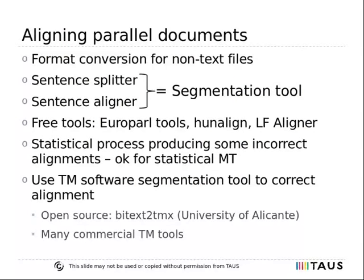Oftentimes, translation resources from previous translation projects are only available as a loose collection of documents in different formats. Before we can bring these into the plain text corpus format, we have to: first, associate source and target document file names, as these sometimes have unrelated naming depending on the used content management system; second, convert the files into plain text; third, align the documents on a paragraph level — aligning means relating the source text paragraph to its translation; and fourth, sentence-split and sentence-align the documents.